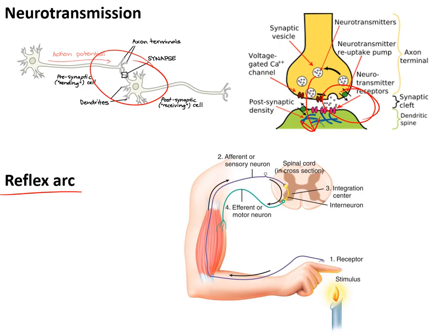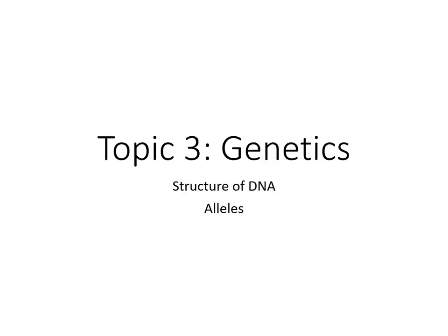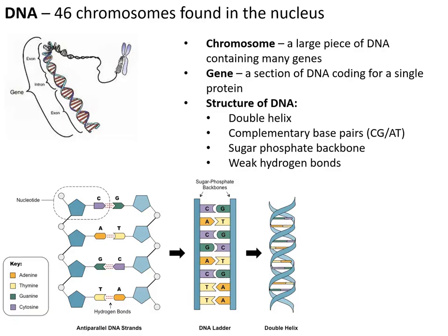The reflex arc allows us to quickly make decisions without thinking to keep us safe. A stimulus is detected by a receptor cell that sends a message up a sensory nerve to the CNS. Relay neurons make a decision and pass an impulse back down a motor neuron to a muscle to make an action such as moving away.